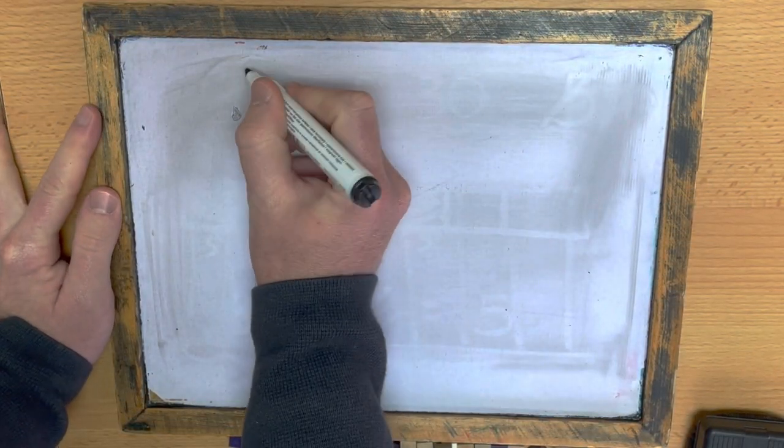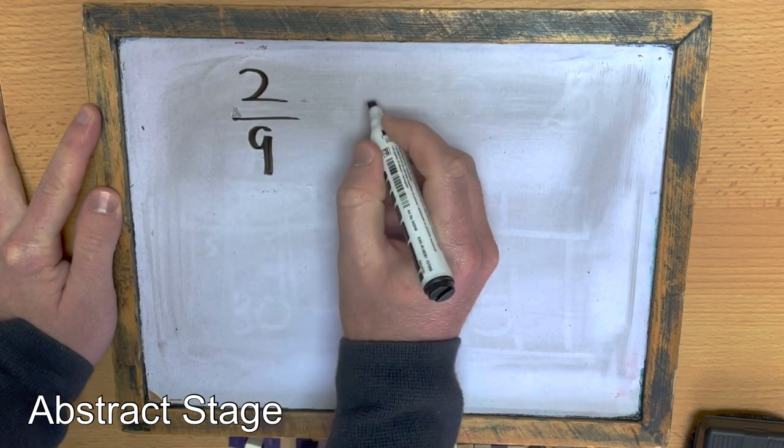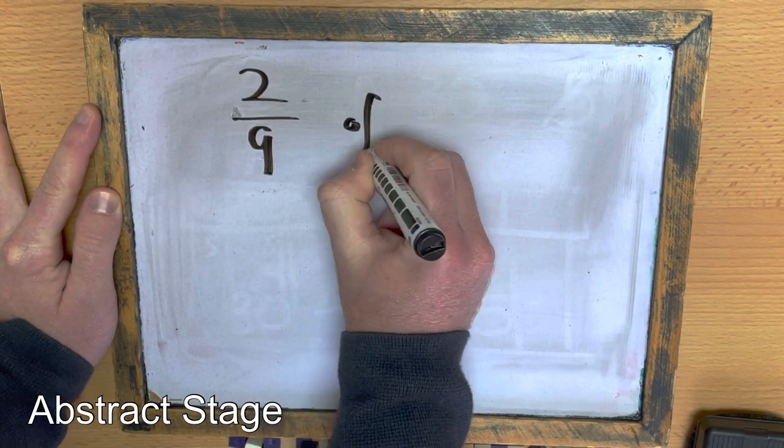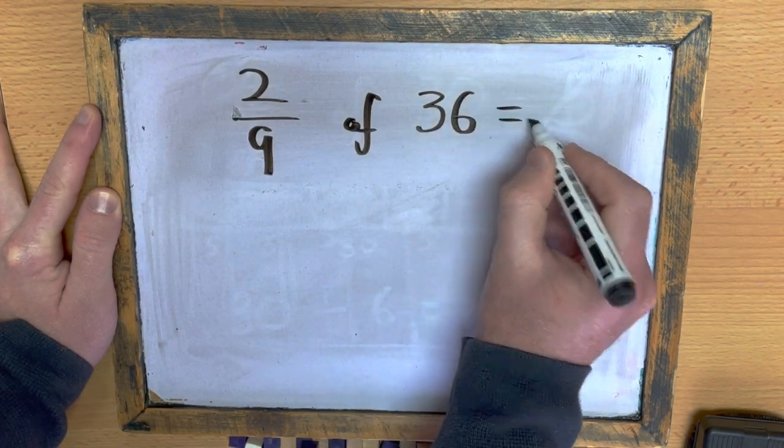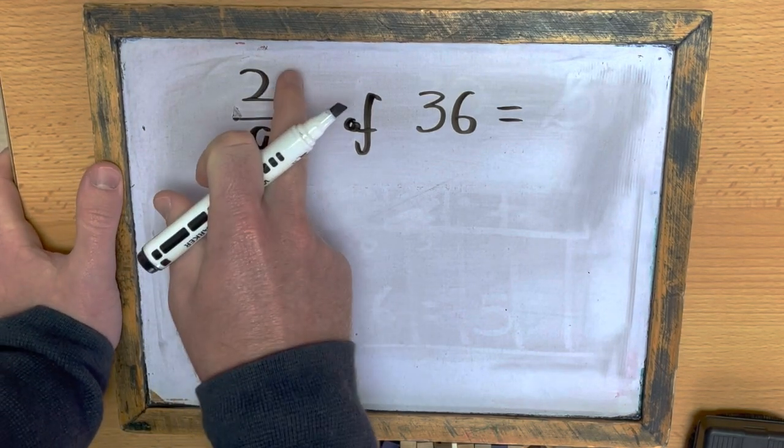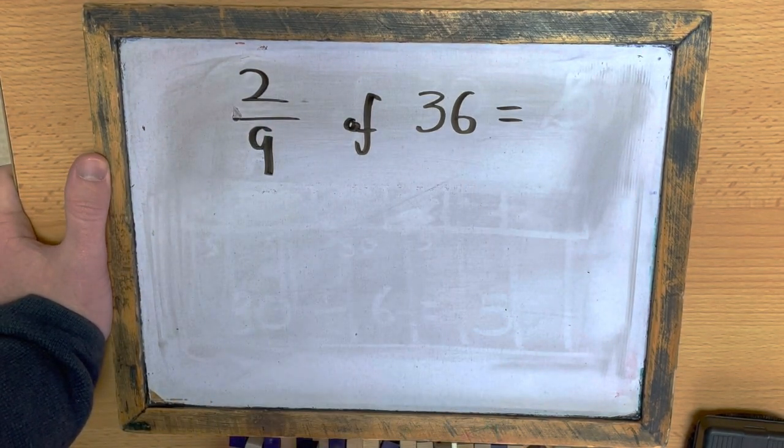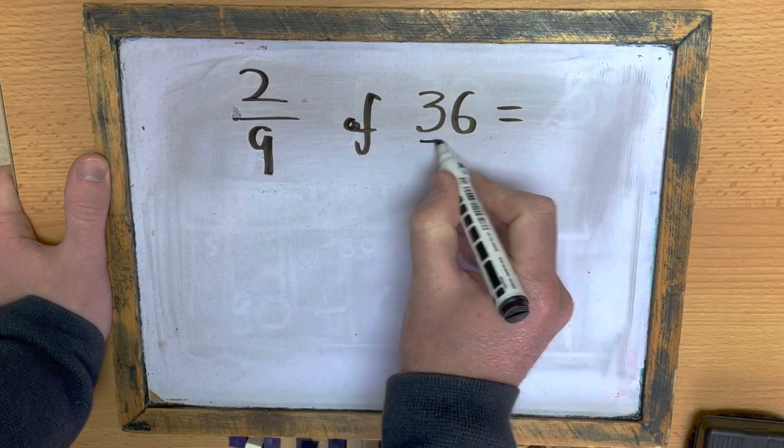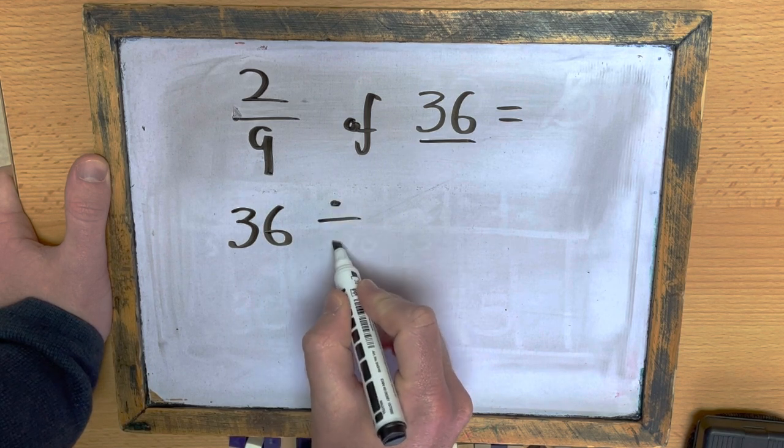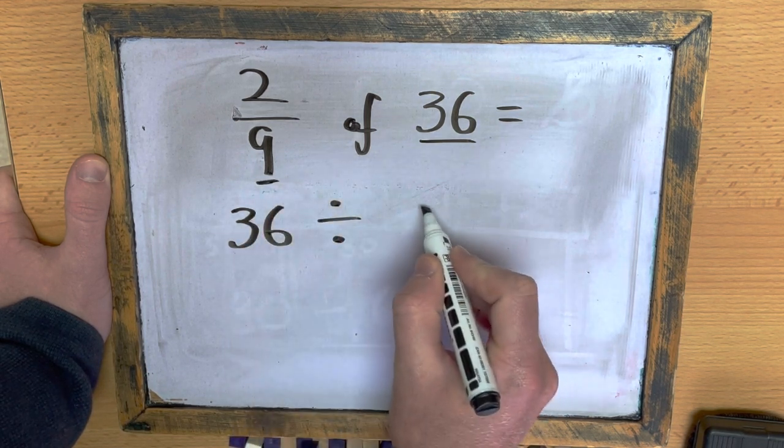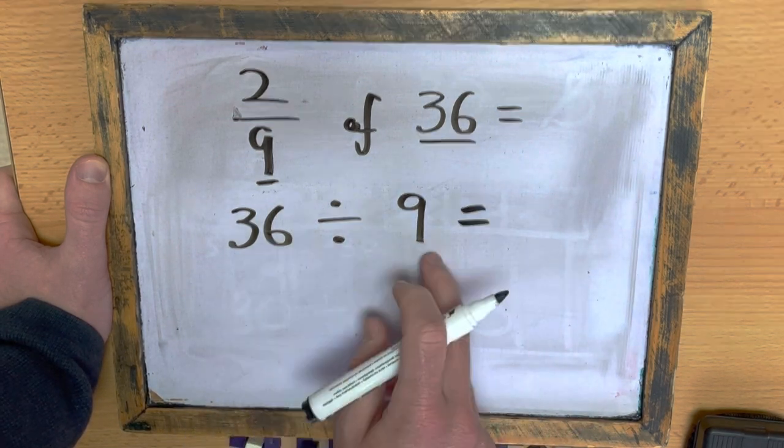Once you've mastered that, you can then just use a pen and a piece of paper to work out a fraction of a number. So, here I need to find two-ninths of 36. So, all you do is take the number, which is 36, and divide it by 9.